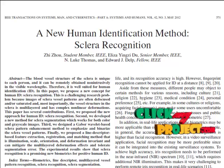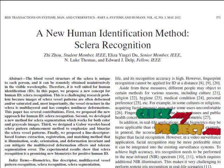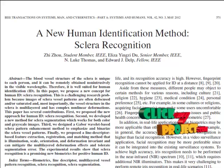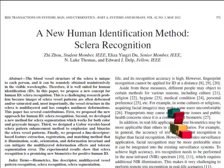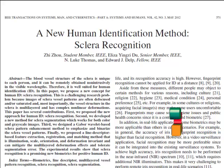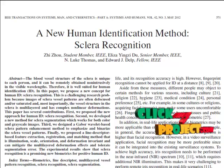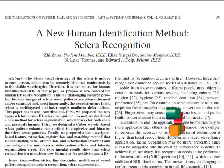The sclera is the white area of the eye, consisting of blood vessels. The vessel pattern is unique for each and every human being, making it useful for identifying a particular person. Among existing biometric recognition systems such as iris and face recognition, sclera recognition will be a powerful alternative.